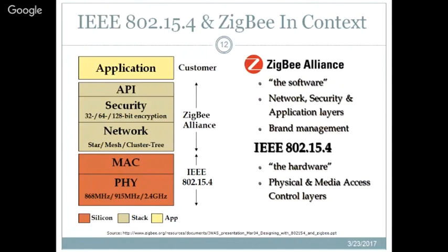The network layer, security, and application programming interfaces are developed by the ZigBee Alliance. At the top are the applications developed by vendors creating commercial products. The ZigBee Alliance also publishes specific application profiles, such as ZigBee Smart Home 3.0, enabling smart home capabilities with all sensor-enabled devices controlled through a coordinator with that profile uploaded.